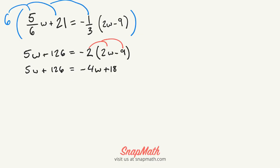Now we're going to add 4w to each side. We'll have 9w plus 126 equals 18. Then we're going to subtract 126 on each side.